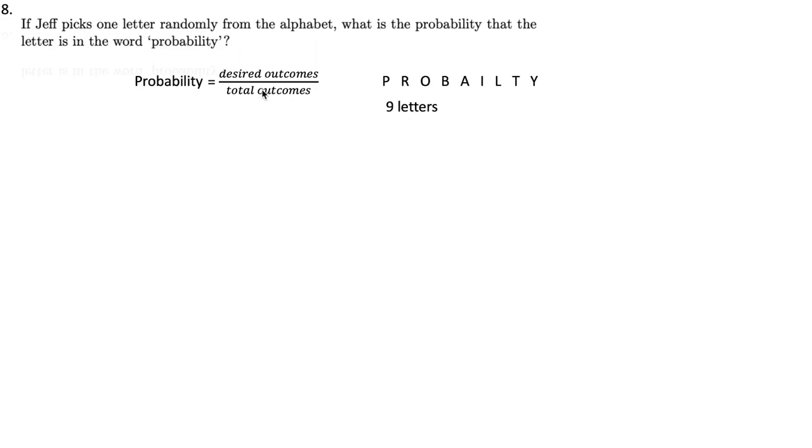So we have nine letters out of, well, what's the total possible outcomes? Randomly picking a letter from the alphabet, so there are 26 possible outcomes. So it's nine out of 26.